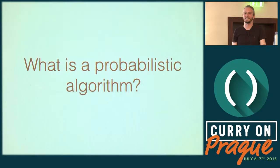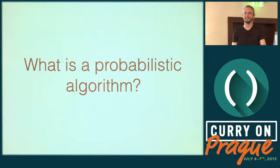So what is a probabilistic algorithm? Formally, it would be an algorithm that incorporates an element of randomness. There are a few different ways that randomness gets into these algorithms. For some, it's literally a rand call. For others, you take the input data and convert it into a form that is uniformly distributed — essentially hashing it. And for others, the randomness is actually intrinsic to the data itself.